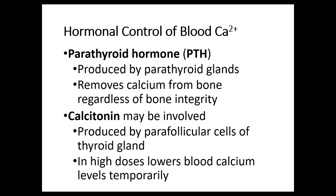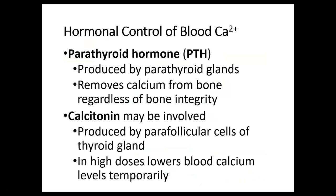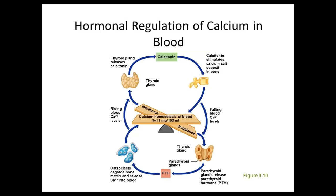Number eighteen: for homeostasis of blood calcium, what amount needs to be present? Please put a star by this number. Blood calcium homeostasis needs to be between 9 and 11 milligrams per 100 milliliters. A diagram goes through how hormone regulation of calcium in blood is controlled, outlining how different hormones play a role in keeping it balanced.